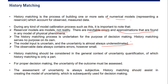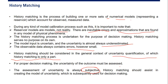The observable data always contain error, however small. That's why we need to do proper history matching. History matching should be considered in the general context of uncertainty quantification, of which history matching is only a part. For proper decision making, the uncertainty of the outcome must be assessed — and the assessment of uncertainty is always subjective. History matching should assist in creating the model of uncertainty which is subsequently used for decision making.